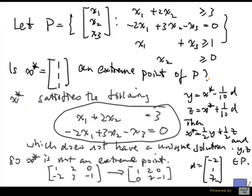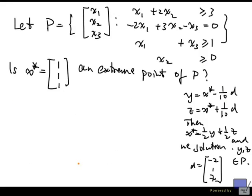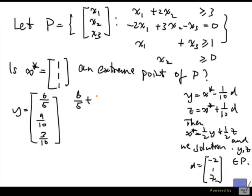We'll do a check. So what is y? y is 6 over 5, 9 over 10, and 3 over 10. So we'll plug into all these inequalities and check if y is satisfied. Okay, so 6 over 5 plus 2 times 9 over 10, that's 2 times 9 over 10 is 9 over 5, so this is 15 over 5, and so that's 3. That shows the first inequality is satisfied.